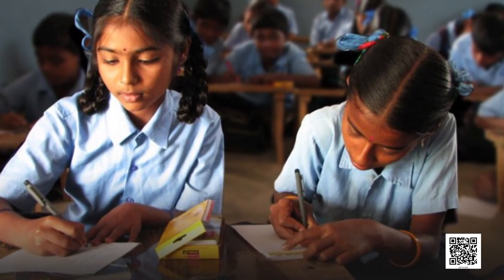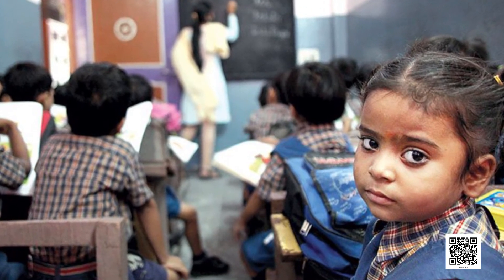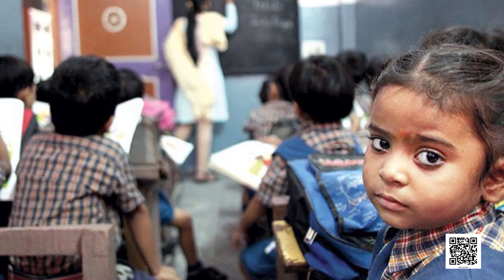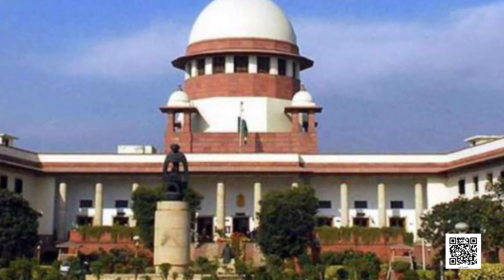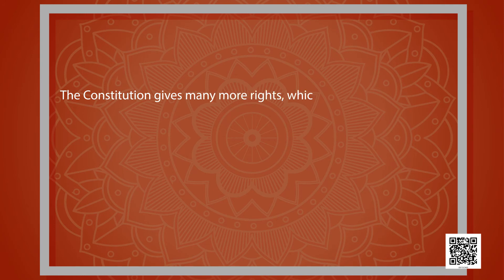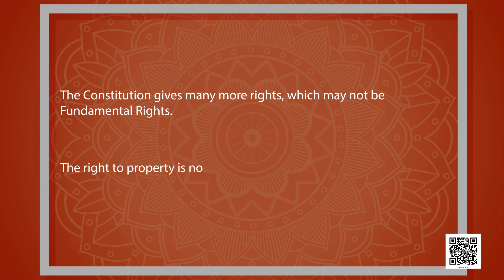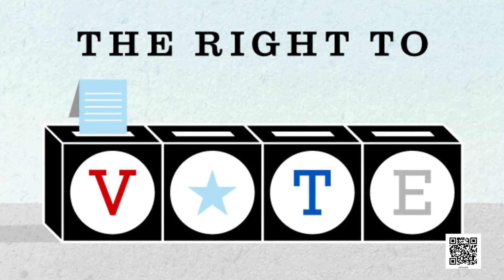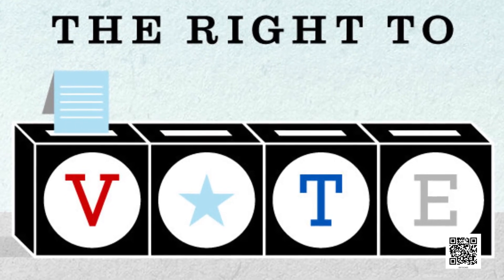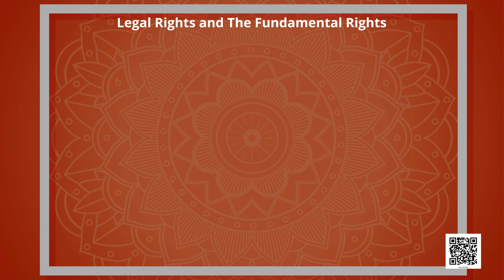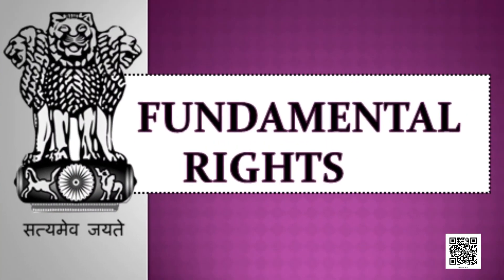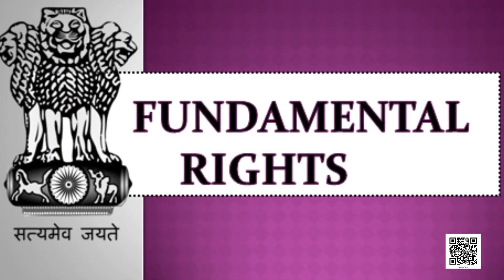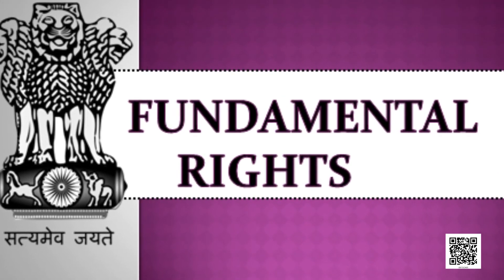School education has now become a right for Indian citizens — the government is responsible for providing free and compulsory education to all children up to the age of 14 years. Parliament enacted a law giving the right to information to citizens. The Supreme Court expanded the meaning of the right to life to include the right to food. The constitution gives many more rights which may not be fundamental rights — for example, the right to property is not a fundamental right but it is a constitutional right. The right to vote in elections is also an important constitutional right.